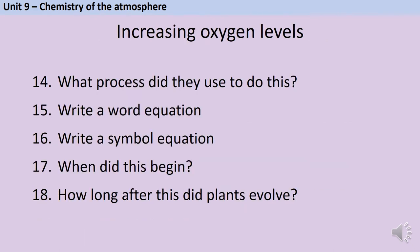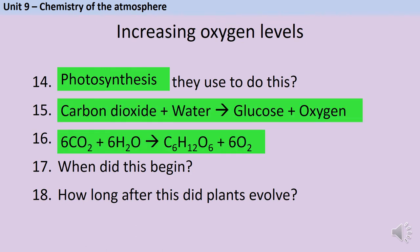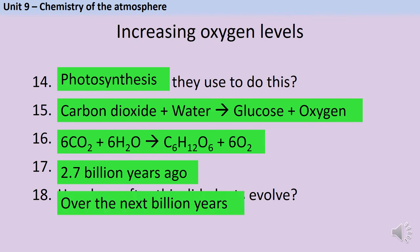Algae produced oxygen by photosynthesis. You hopefully know the word equation for photosynthesis, or the symbol equation, which we can balance with some sixes. This whole process began about 2.7 billion years ago, and about a billion years after that, over the next billion years, higher plants started to evolve from the algae.